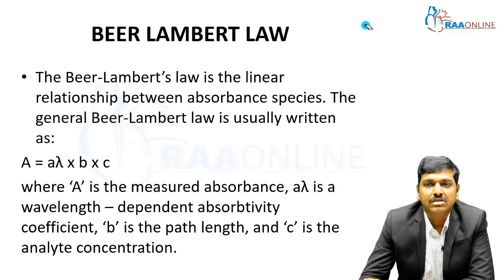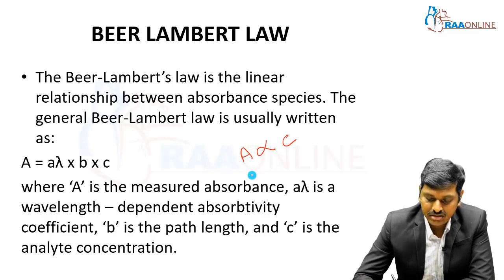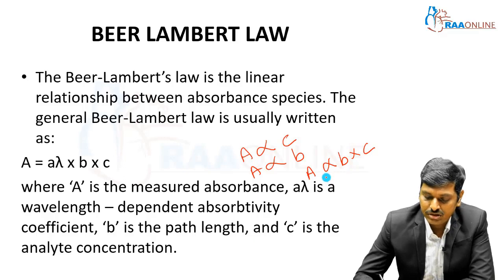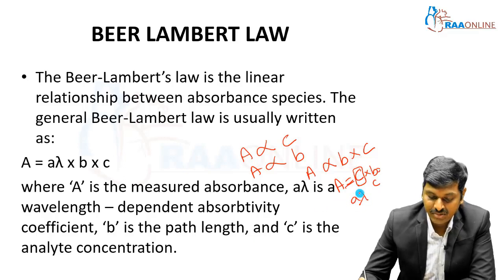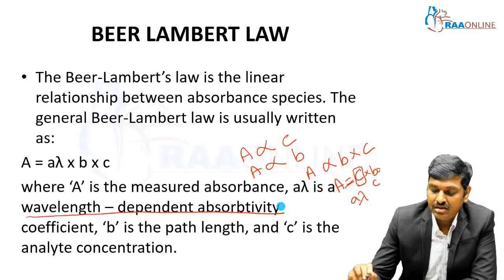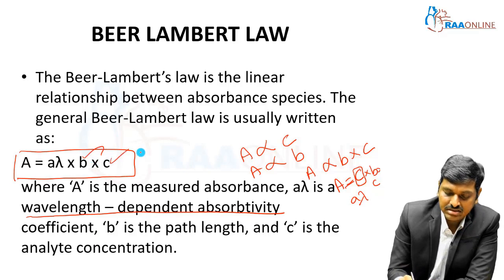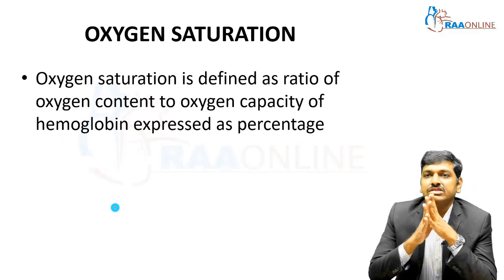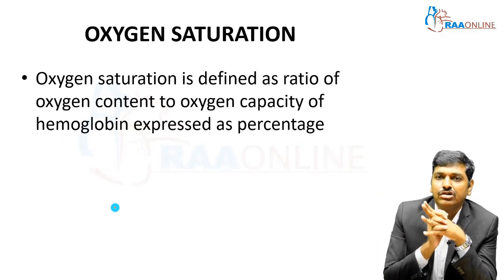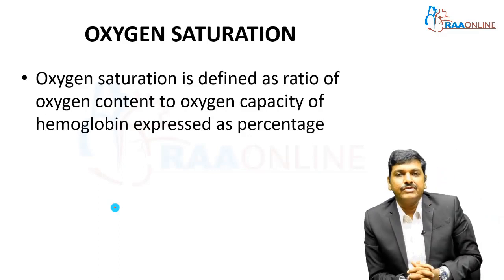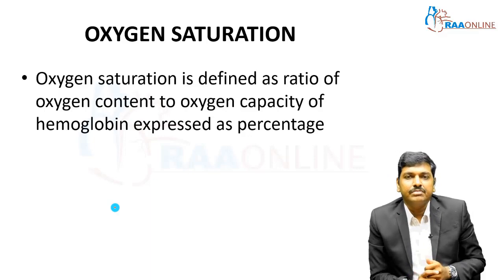Combining these, the Beer-Lambert law expresses a linear relationship: absorbance A is proportional to both concentration and path length. Introducing a constant, the equation becomes A = A-lambda × B × C, where B is the path length, C is the concentration, and A-lambda is the wavelength-dependent absorptivity specific to each substance. Oxygen saturation is defined as the ratio of oxygen content to the oxygen capacity of hemoglobin expressed as a percentage — for example, 14 out of 15 grams saturated gives approximately 93–94%.